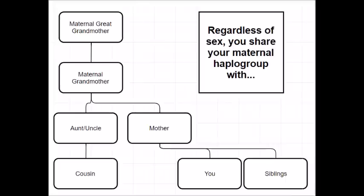Similarly, barring genetic mutation, regardless of gender, you will share the same maternal haplogroup with your mother, all of your biological siblings born to the same mother, all of your maternal aunts and uncles, any maternal cousins born to your aunt, as well as your maternal grandmother, her mother, and so on. And if you're a female, then all biological children of yours will share your maternal haplogroup, although only your female children will pass it on to their offspring.